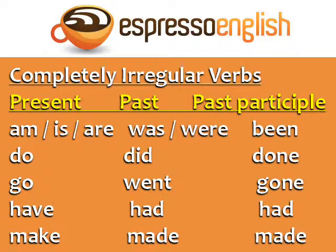Finally, we have the completely irregular verbs. These verbs don't follow any specific pattern, so you just need to memorize their past and past participle forms. The verb 'to be' is am, is, or are in the present; was or were in the past; and been in the past participle. Do — did — done. Go — went — gone. Have — had — had. Make — made — made.